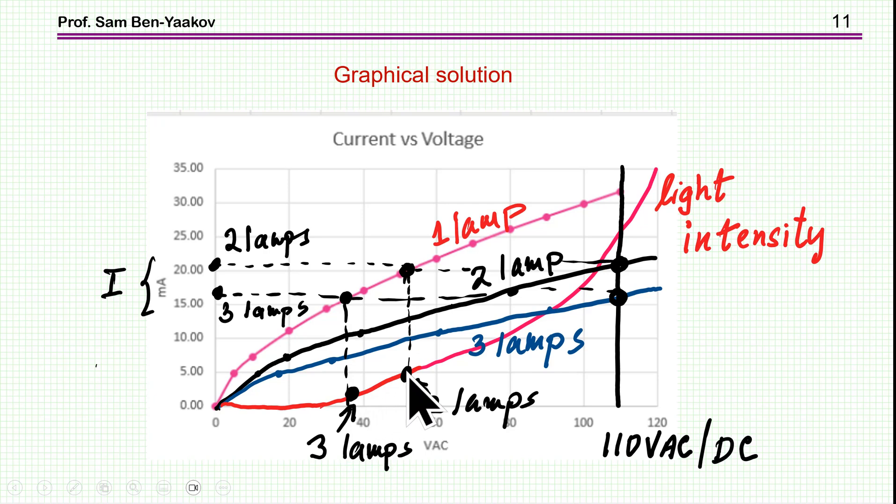So we see that obviously, for the two lamps, the light intensity is higher. And for the three lamps, it's lower. So in this case, there'll be no change in the light intensity between two and three lamps. I mean, there will be no change in the fact that you see light.